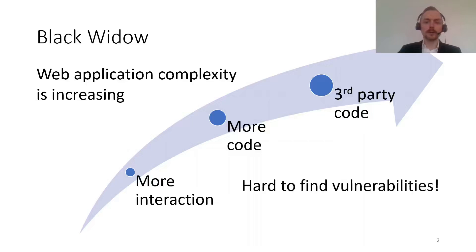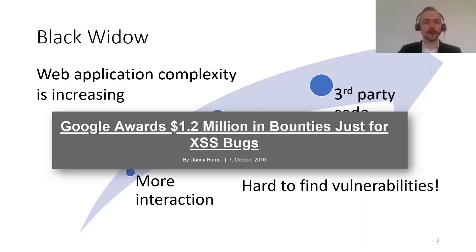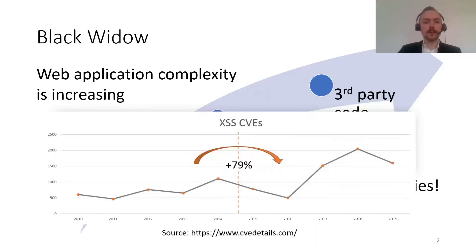And this all makes it harder to find vulnerabilities. At the same time, a few years ago, Google awarded over a million dollars in bounties just for cross-site scripting bugs. And if we look at the number of CVEs from cross-site scripting, we can see that between the years 2015 and 2019, compared to the previous five years, they have increased by almost 79%.